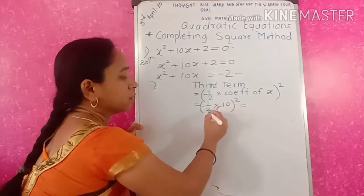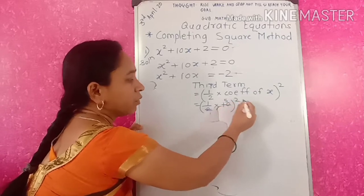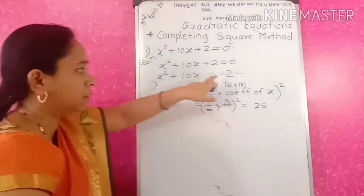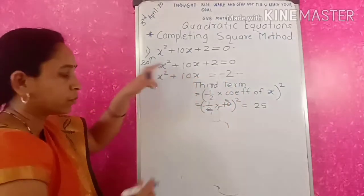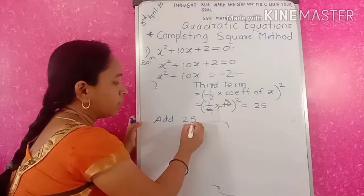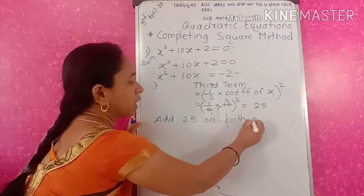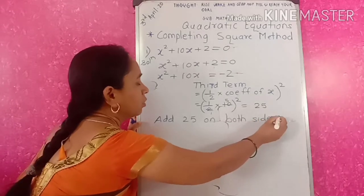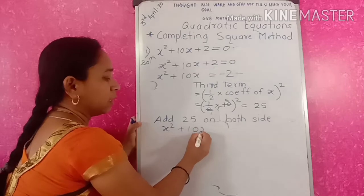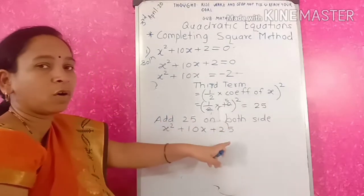If you solve it: 2 ones are 2, so 5 squared would be 25. That means if we add the third term 25, we will get the perfect square. So add 25 on both sides. What we will get is x squared plus 10x plus 25 — I have added 25 on the LHS.